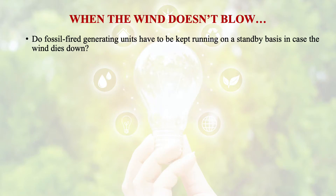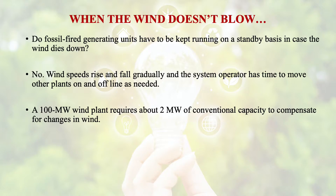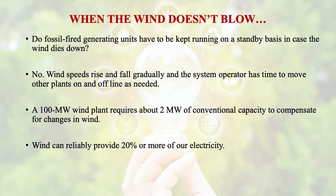We have already discussed the various limitations of wind power in our previous modules. However, regarding the concern about when the wind doesn't blow — do we need fossil fuel generating units kept running on standby? Certainly not. Wind speeds rise and fall gradually and the system operator has time to move other plants on and offline as needed. Typically, a 100 megawatt wind plant requires about 2 megawatt of conventional capacity to compensate for changes in wind. Wind energy can reliably provide 20% or more of our electricity.